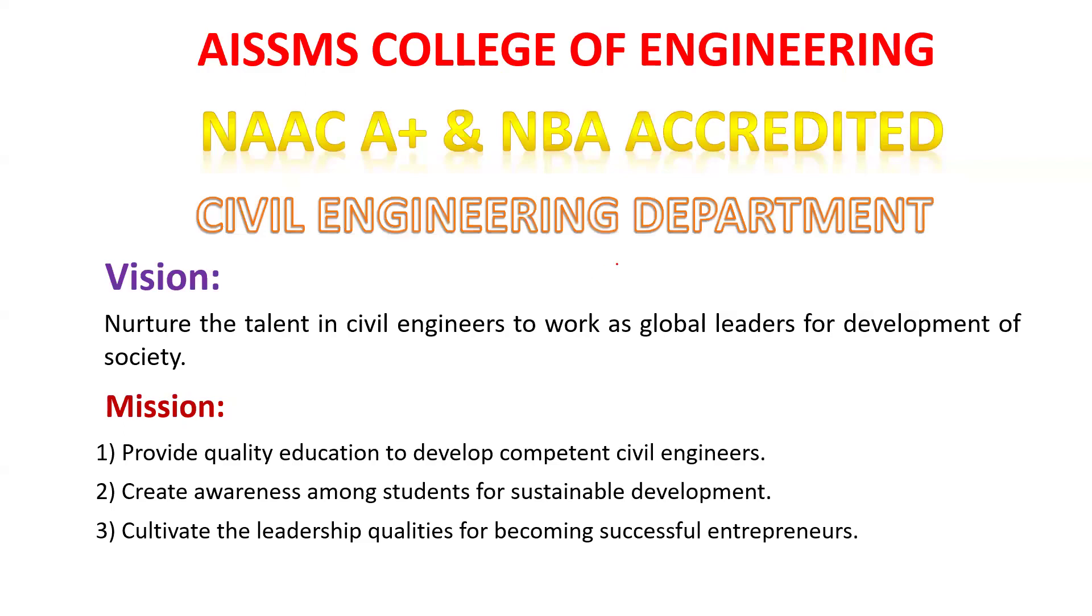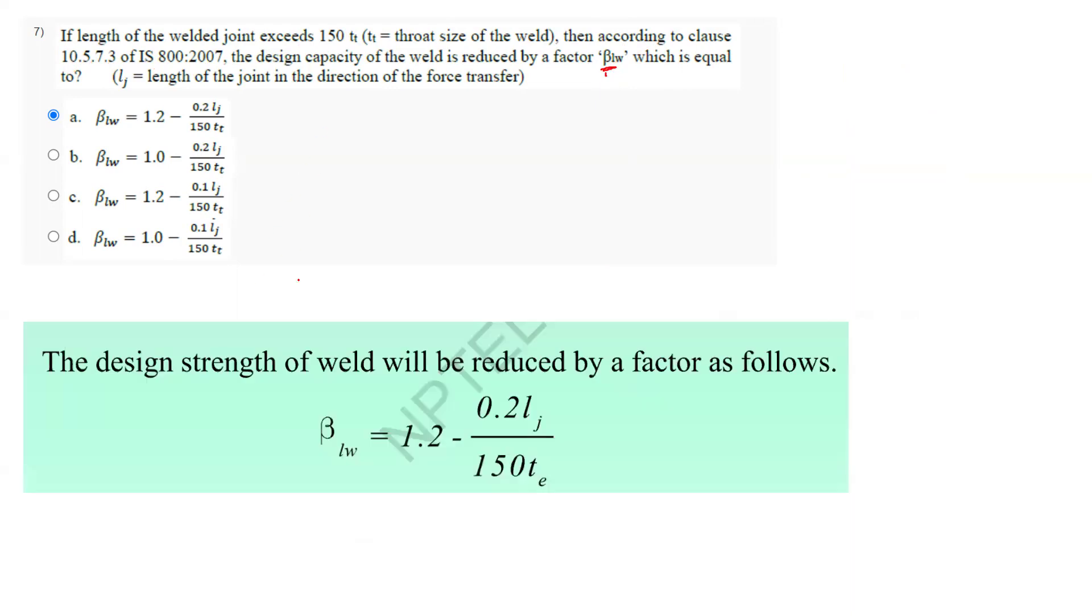Now, we are going to see the remaining questions from assignment number 2. If the length of the welded joint is 150TF, then we are interested to find BLW. In the given clause number, we have the formula: 1.2 minus 0.2LJ upon 150T. So the answer is option A.